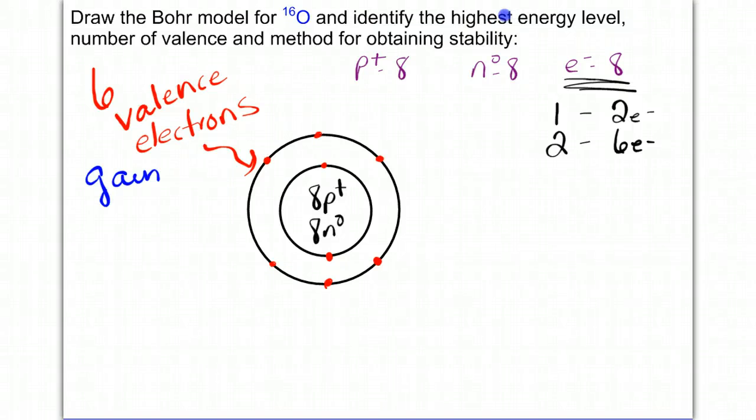Then it would have 8 electrons total, which would be an octet. And that's what it wants. So that's how we would predict the stability. So oxygen has 6 valence electrons, and by gaining 2 electrons, it will have its 8 valence.